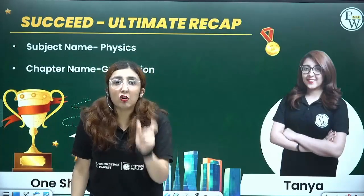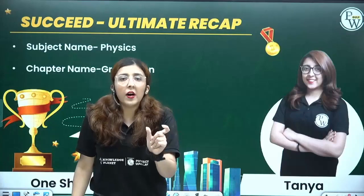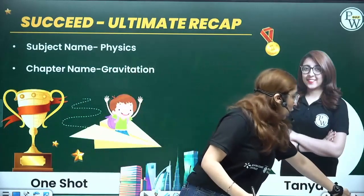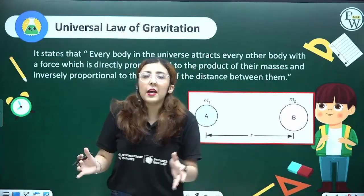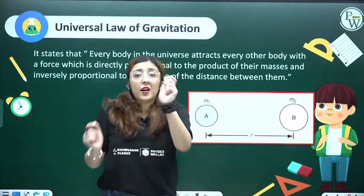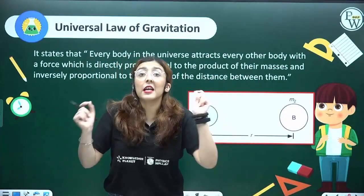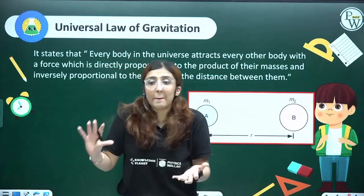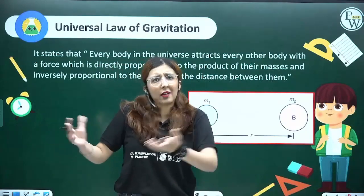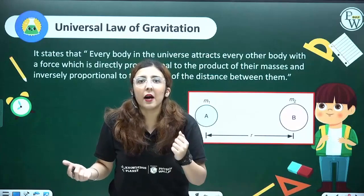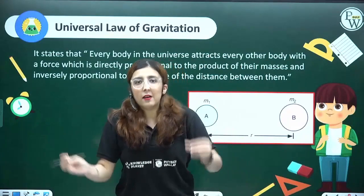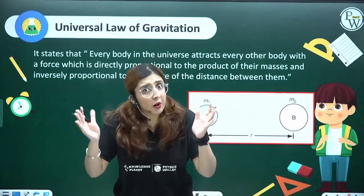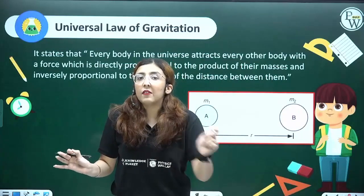Whenever we talk about gravitation force, understand that you are talking about masses. In order for gravitation to occur, there should be matter around you — matter is anything that occupies space and has mass. Tables, chairs, pens, paper, pencils — all these objects have mass. I have mass, you have mass. So there will always be some gravitational force involved.